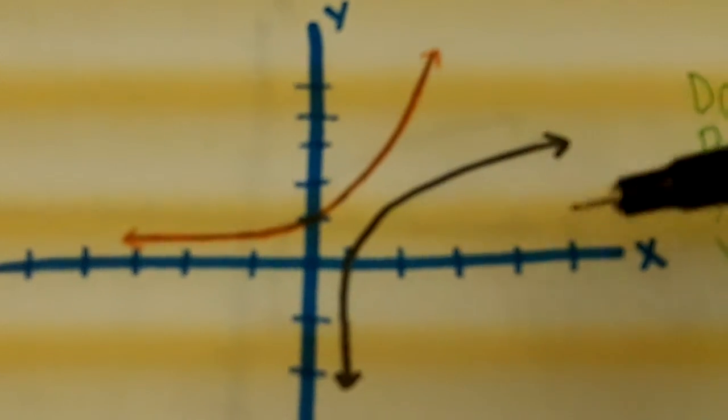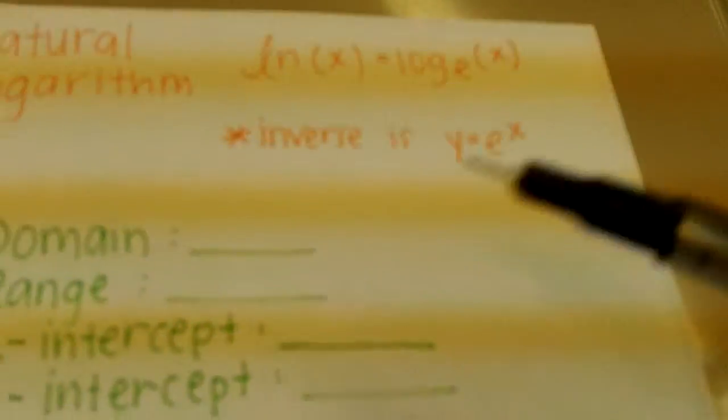The graph in black is the original graph, and the orange graph is the inverse, which is y equals e to the x.